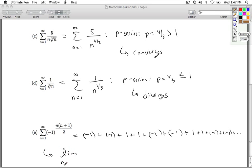So if we take the limit as n goes to infinity of negative 1 to the n times n plus 1 over 2, this limit does not exist. In particular, this limit is not 0. So by the nth term test, it diverges.